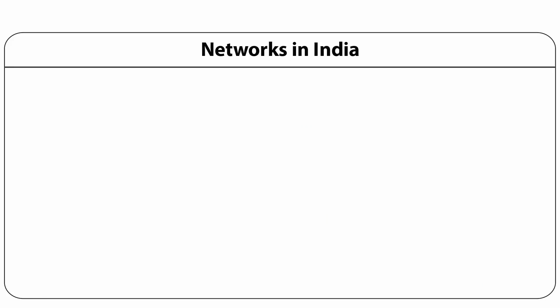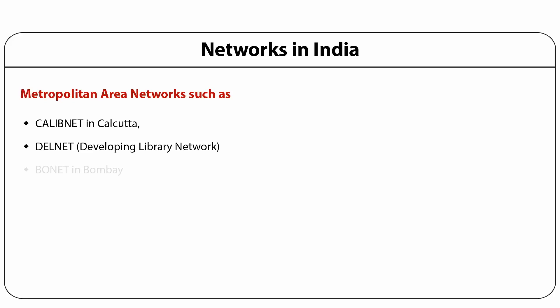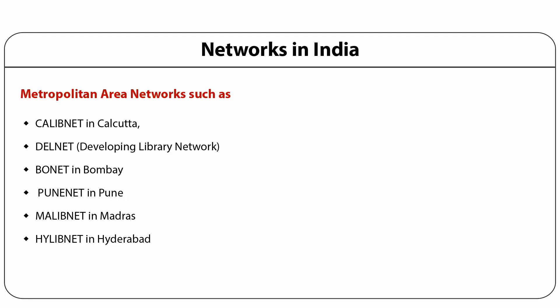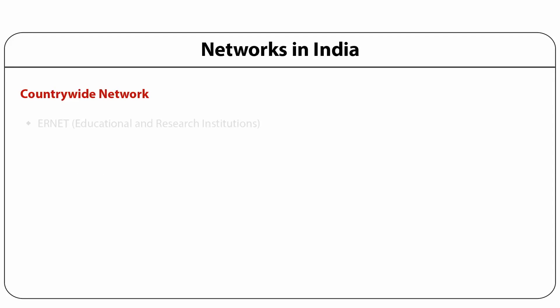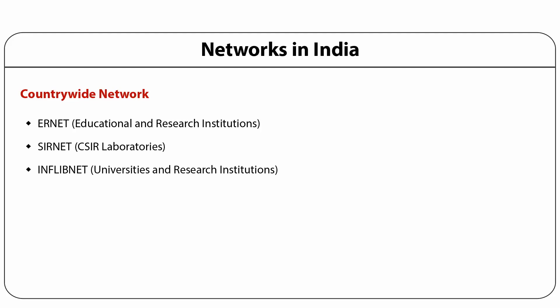A large number of library resource sharing networks, like metropolitan area networks such as CALIBNET in Calcutta, DELNET in Delhi, BONET in Bombay, PUNET in Pune, MALIBNET in Madras, HILIBNET in Hyderabad, ADNET in Ahmedabad, MylibNET in Mysore, and countrywide ones like ERNET, SARNET for CSIR laboratories, INFLIBNET for universities, and sectoral ones like BTNET for biotechnology, are conceptualized. The concept of library networking to aid information resource sharing had become a real necessity.